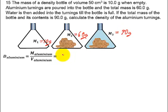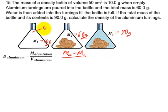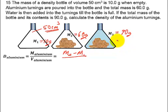To calculate the density of aluminium, we need the mass of aluminium and the volume of aluminium. To get the mass of aluminium, I just need M2 minus M1 — that is direct. For the volume of aluminium: the difference between M3 and M2 gives the mass of the water above the aluminium. So the mass of water, MW, is 90 grams minus 60 grams, which gives 30 grams.